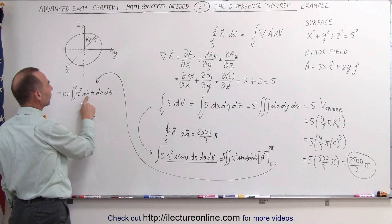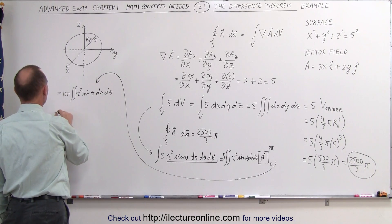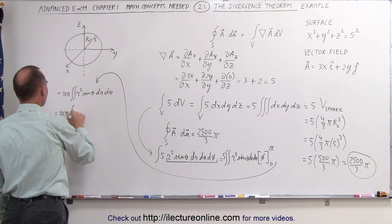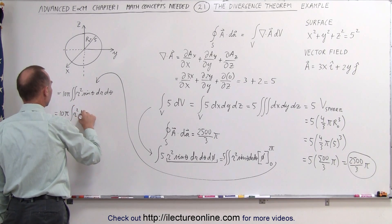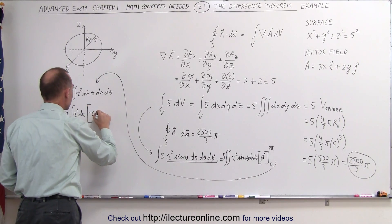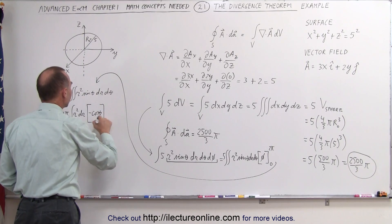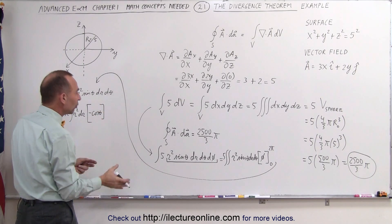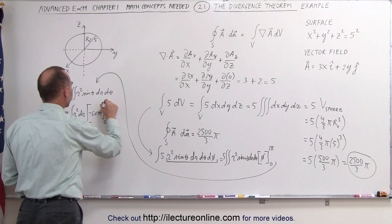So the next we can do is integrate sine of theta d theta. That leaves us with 10 pi times the integral of r squared dr, times the integral of the sine of theta is the minus cosine. And theta is going to be integrated from 0 to pi, 0, only 180 degrees.